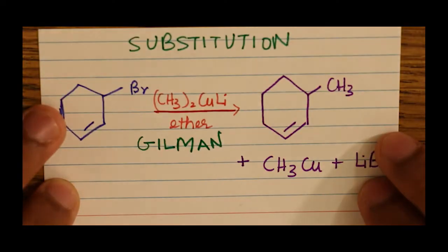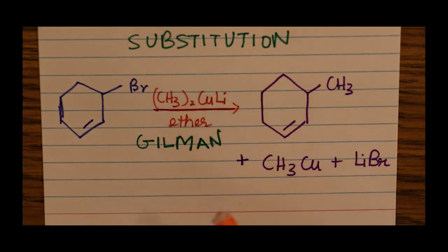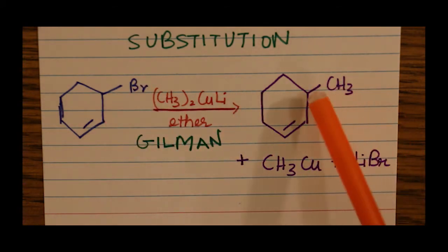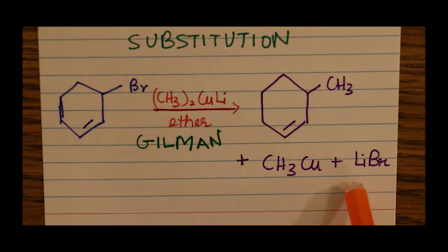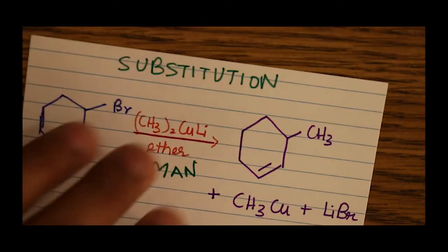Let's move on to substitution reactions. This one is in the presence of a Gilman reagent — and whenever you see Gilman, remember organocuprate; there's copper and lithium involved. In this case, there's a dimethyl group, and one of the methyl groups from it gets substituted on the ring. The Br leaves and the methyl comes in its place. The other products are lithium reacting with the bromine and one methyl group reacting with the copper.